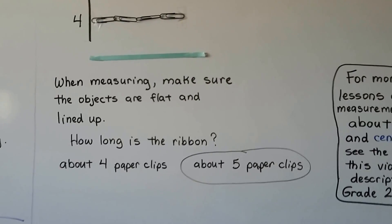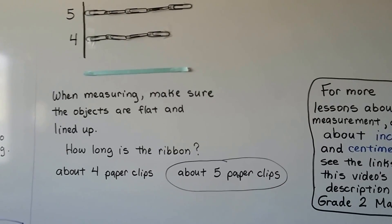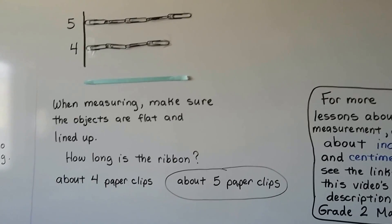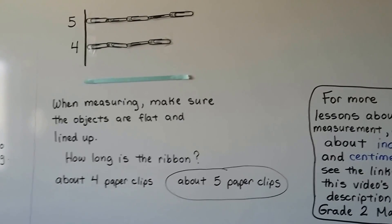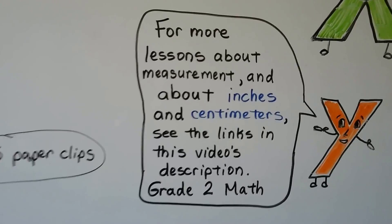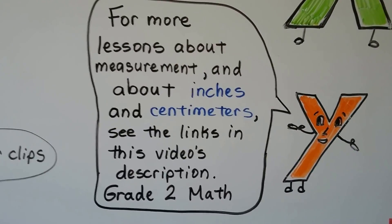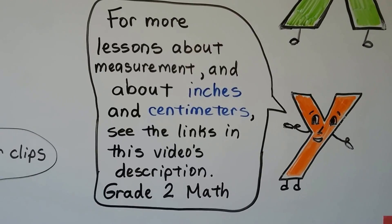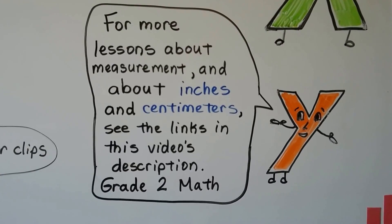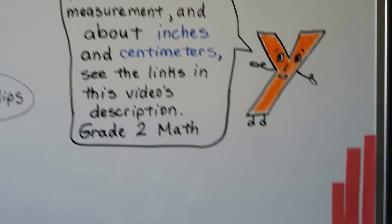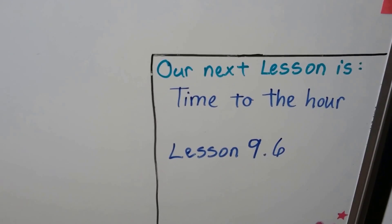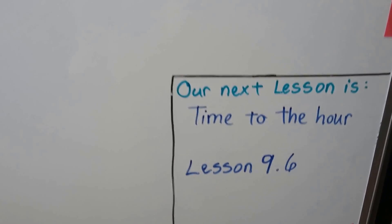Some first grade math books talk about inches and centimeters and some don't. The GoMath book we're using, which is Common Core, doesn't go into inches and centimeters for first grade. For more lessons about measurement and inches and centimeters, see the links in this video's description for my grade 2 math about measurement, height, and length. Our next lesson is time to the hour — we're going to learn about o'clock. That's Lesson 9.6.